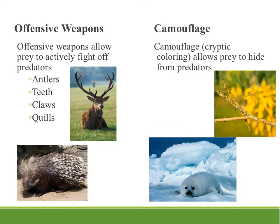The next two categories: prey are not completely defenseless — they might have offensive weapons like antlers, teeth, claws, or quills like this porcupine, which allow them to fight back when the predator gets at them.